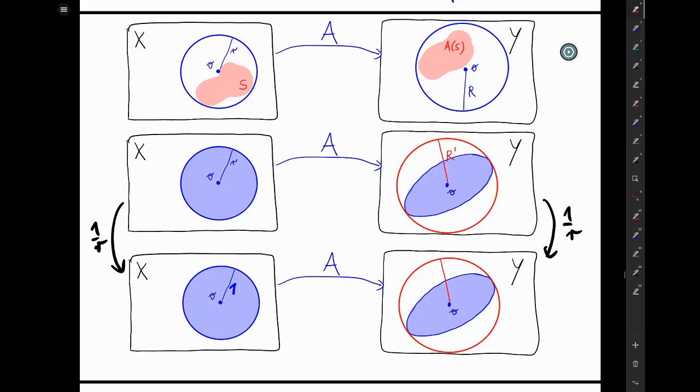we end up with a covering disk of radius, let me call it for simplicity, T. Well, T is just R dash divided by little r.